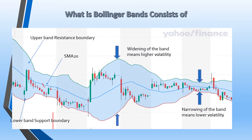The Bollinger Band indicator consists of three elements. The first one is the median, which is the 20-day period simple moving average. The second one is the upper band, which acts as a resistance boundary. Upper band and lower band have a distance of plus or minus 2 standard deviations, which is a measure of statistical dispersion from SMA-20, and acts as a resistance level.